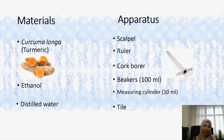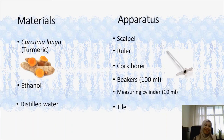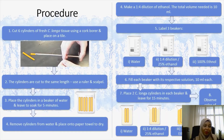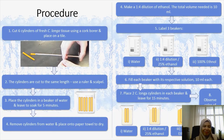For apparatus, you need a scalpel, ruler, cork borer, measuring cylinder, and tile. For the procedures: first, cut six cylinders of fresh Curcuma longa tissue using a cork borer and place them on the tile. Make sure all cylinders are cut to the same length using a ruler and scalpel. Then place the cylinders in a beaker of water and leave them to soak for five minutes.